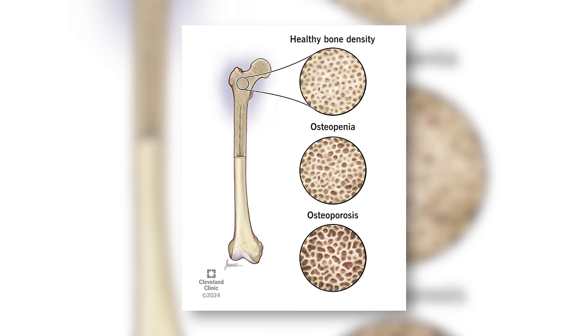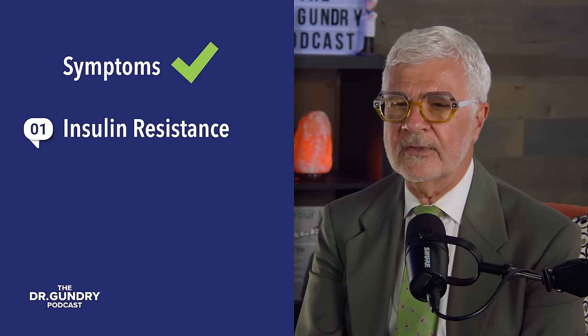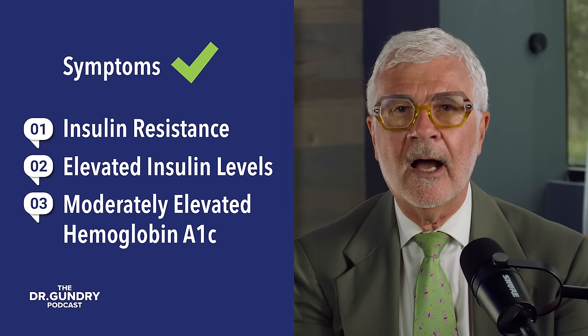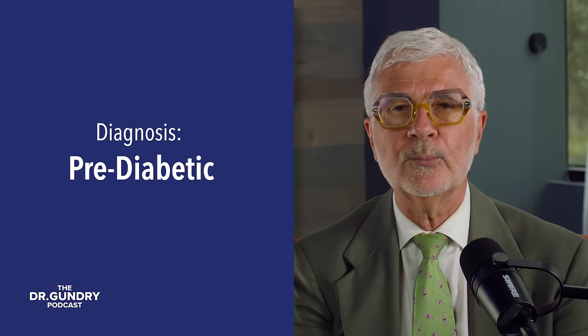Today we're going to talk about the symptoms of osteopenia and osteoporosis and what you should do about it. First, let's be clear: osteopenia and osteoporosis are the same thing. When I see a patient with insulin resistance and a moderately elevated hemoglobin A1c, I diagnose them as pre-diabetic — but calling someone pre-diabetic is like telling a woman she's a little bit pregnant. There's no such thing. And quite frankly, there's no real difference between osteopenia and osteoporosis. The underlying cause is exactly the same.